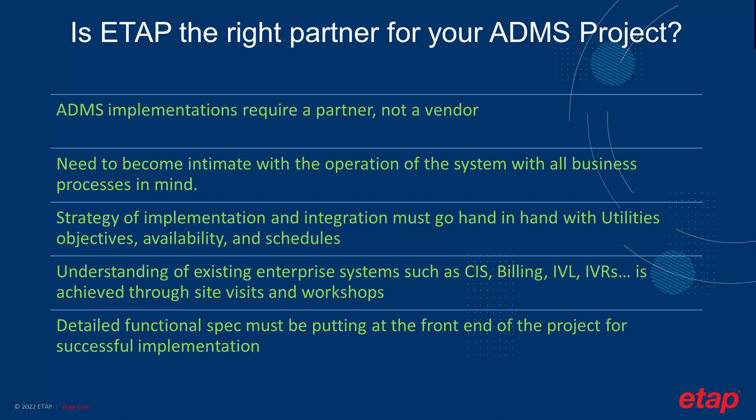The partner needs to work intimately with the utility operators, planners, and engineers to understand the objectives, availability, and business processes that may be existing in the utility. One of the objectives of the ADMS is to come and support and complement the existing processes. At the front end of the project, one must create a detailed functional spec including the integration of the enterprise solution. It is important for a successful project implementation, and ETAP treats this step as a critical item.